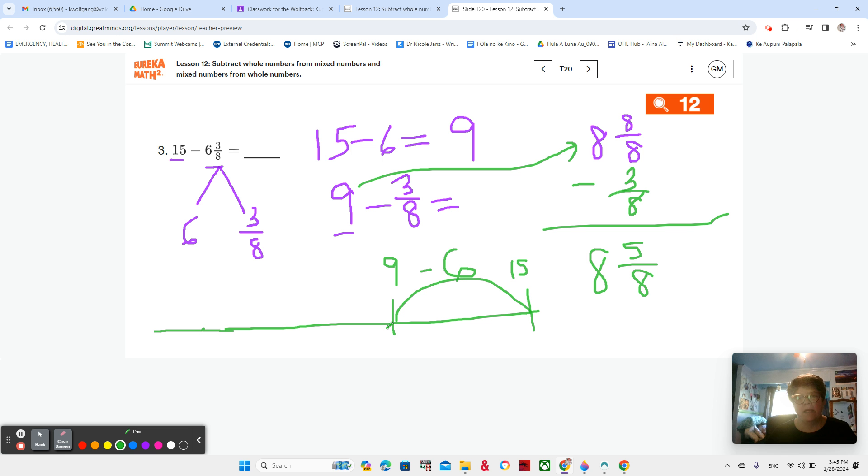So that's 15 minus 6 equals 9. And then 9 minus 3 eighths. Okay. So break this into eighths. 1, 2, 3, 4, 5, 6, 7 lines. Makes eighths. We're at 9. We're going to take away 3. 1, 2, 3. Where do we land? We land at 5 eighths. So we have 8 and 5 eighths, just like we do right here.